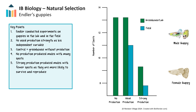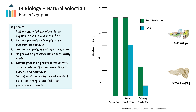Males with fewer spots are more likely to survive and reproduce. In this case, males with more colorful spots do not make it to reproductive age as they are hunted by predators, while those evading predators survive and reproduce. Endler studied many different variables in his experiments, including the color of spots, area of spots, as well as population numbers, and supported the idea that sexual selection strength and survival selection strength can shift the phenotypes of males in the population.